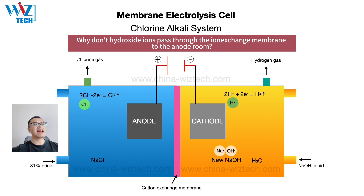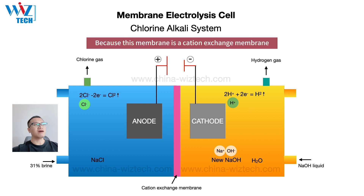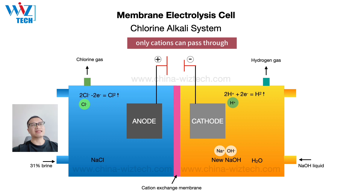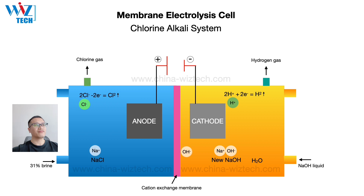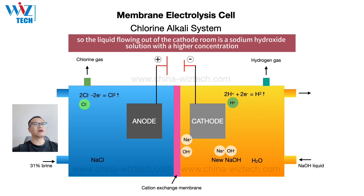Why don't hydroxide ions pass through the ion exchange membrane to the anode room? Because this membrane is a cation exchange membrane — only cations can pass through, so only sodium ions can pass through. The liquid flowing out of the cathode room is therefore a sodium hydroxide solution with a higher concentration.